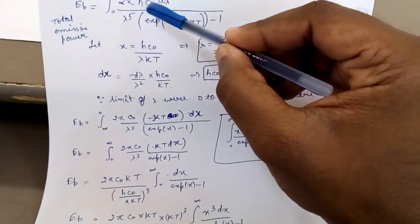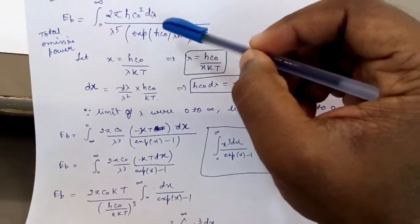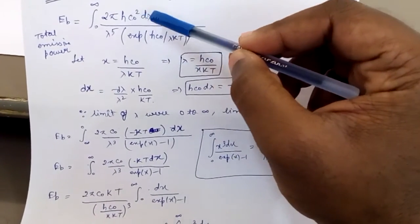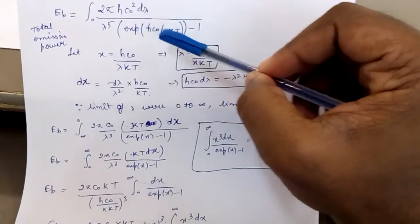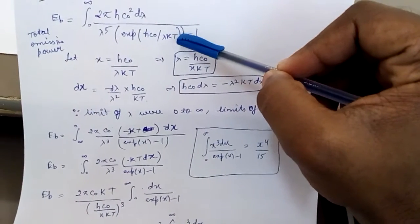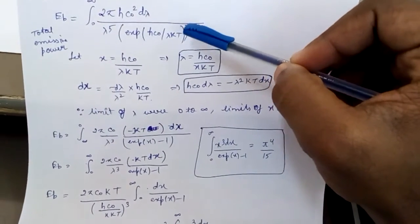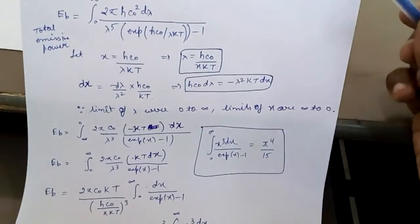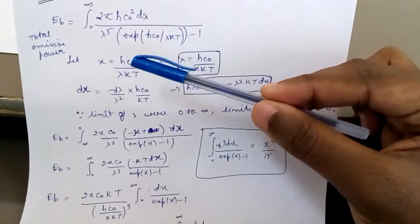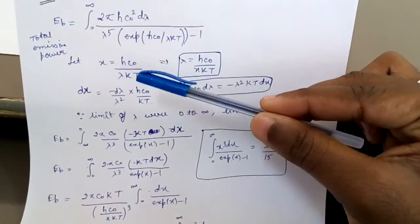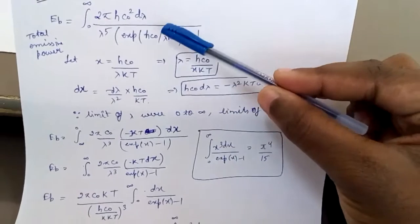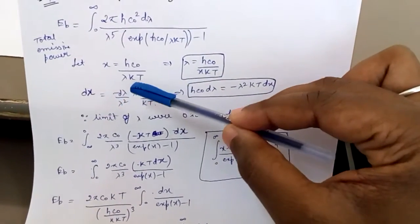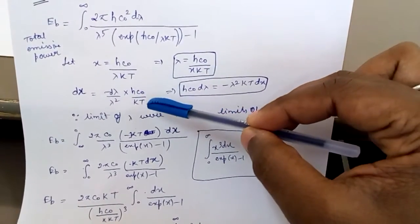Where h = 6.6 × 10⁻³⁴ joule·second, that is Planck's constant. c₀ is the velocity of light. k is Boltzmann constant = 1.38 × 10⁻²³ joule per kelvin. To derive it, I have taken the substitution x = hc₀/(λkT), so this term hc₀/(λkT) equals x.